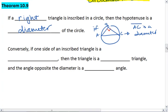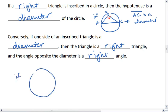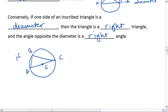This works the other way, too. If one side of an inscribed triangle is a diameter of a circle, then the triangle is a right triangle, and the angle opposite the diameter is a right angle. Meaning if we have a triangle such that AC is a diameter, then ABC must be a right triangle with its right angle at angle B.